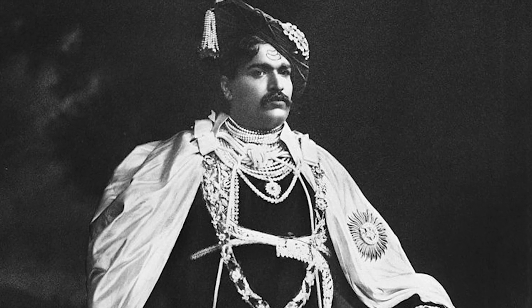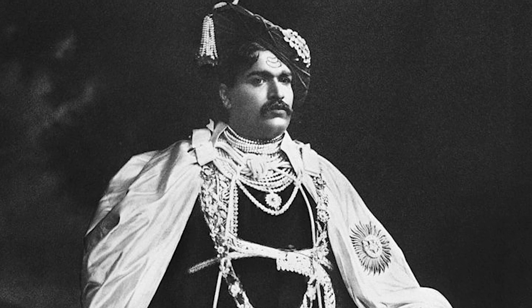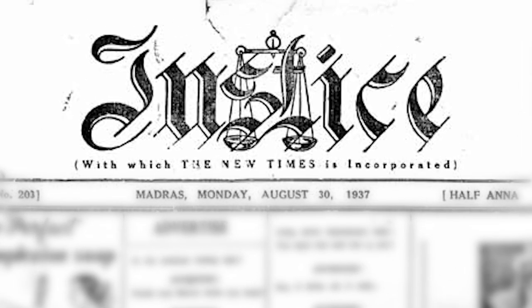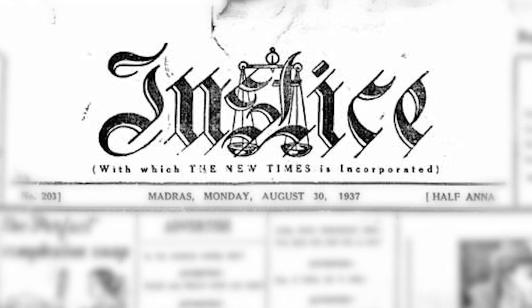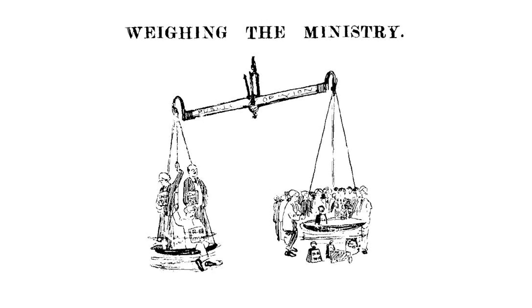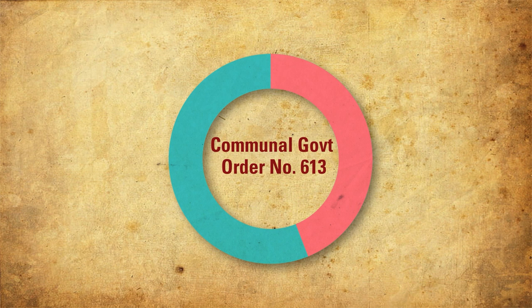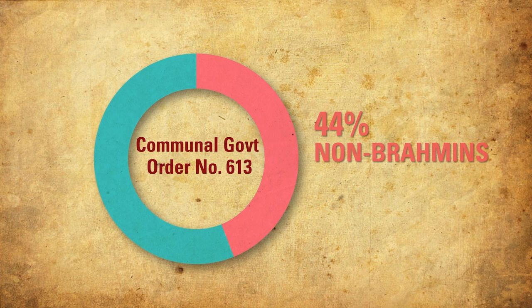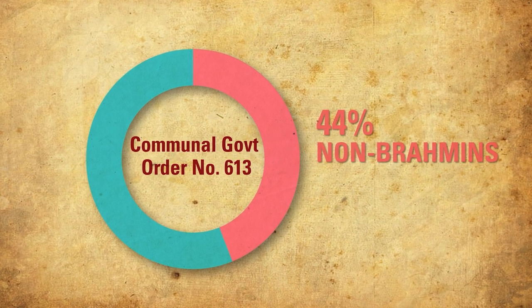Chhatrapati Shahu died in 1922, but the idea of reservations quickly began to gain popularity across India. On 20th November 1916, the South Indian People's Association was formed in Madras. It later evolved into the Justice Party. A month later, the Association published its famous Non-Brahmin Manifesto, which argued for reservation in government jobs and education for non-Brahmin castes. In 1921, the Justice Party's government in Madras province passed the Communal Government Order No. 613, reserving 44% of jobs for non-Brahmins. It was the first reservation policy to be implemented by a popularly elected government.